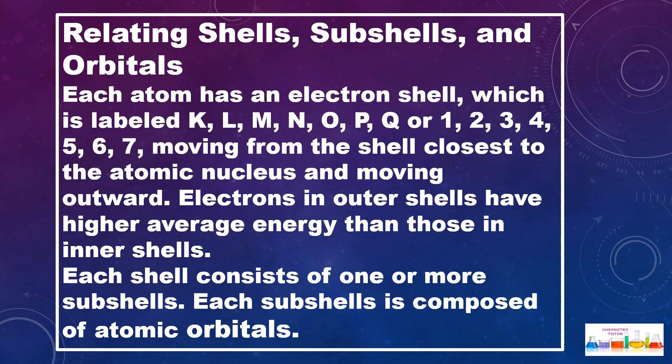How can we relate shells, subshells, and orbitals? Each atom has an electron shell which is labeled as K, L, M, N, O, P, Q or 1, 2, 3, 4, 5, 6, 7, moving from the shell closest to the atomic nucleus and moving outward.